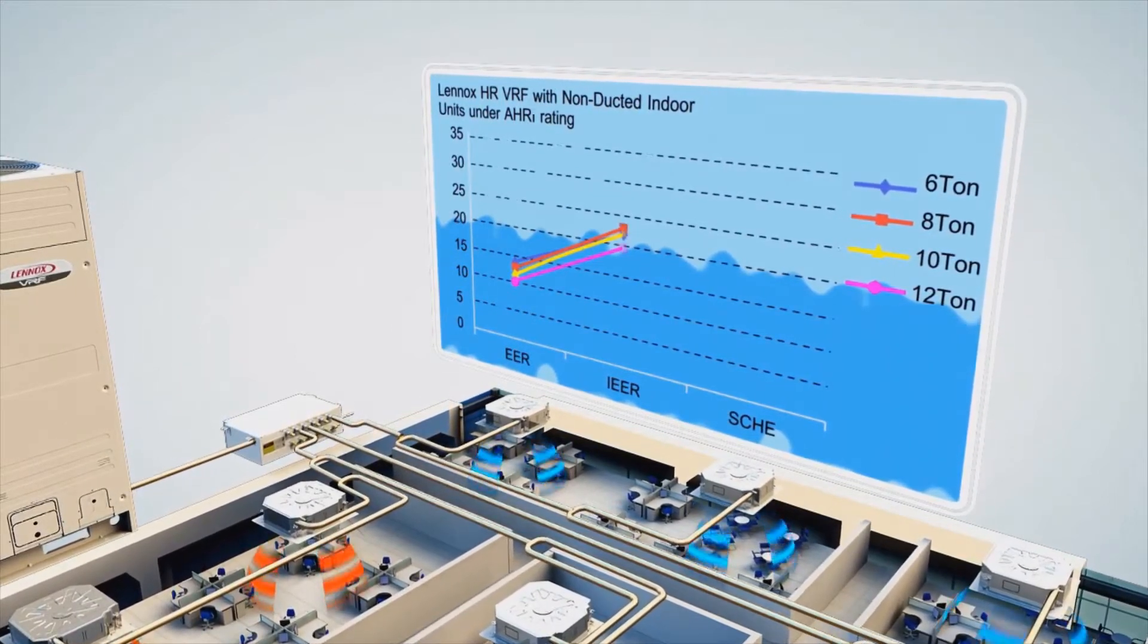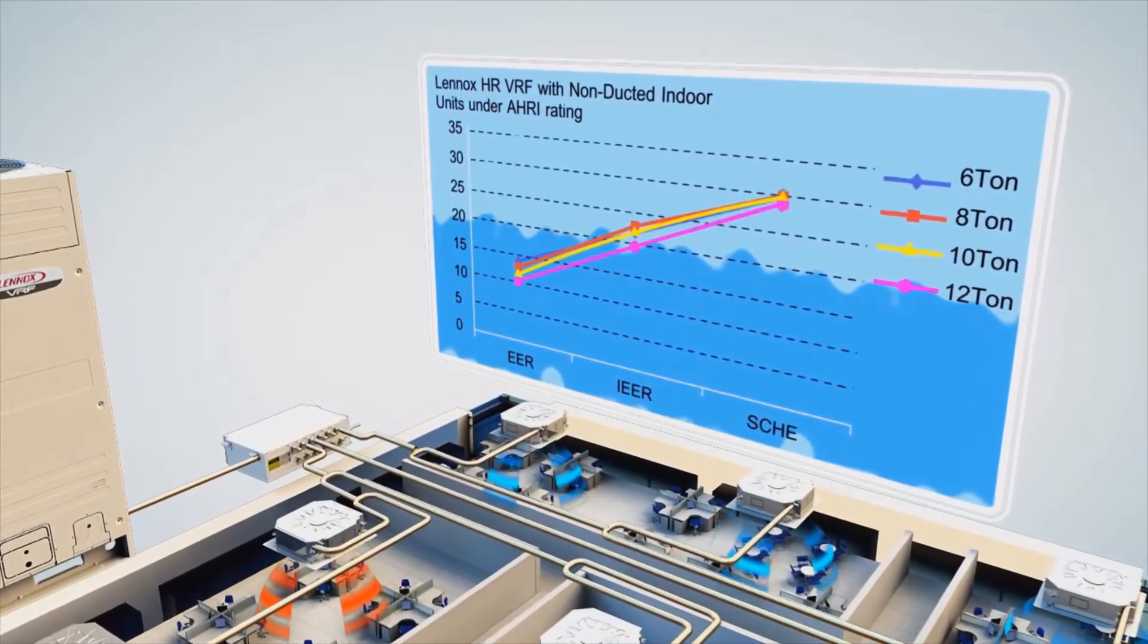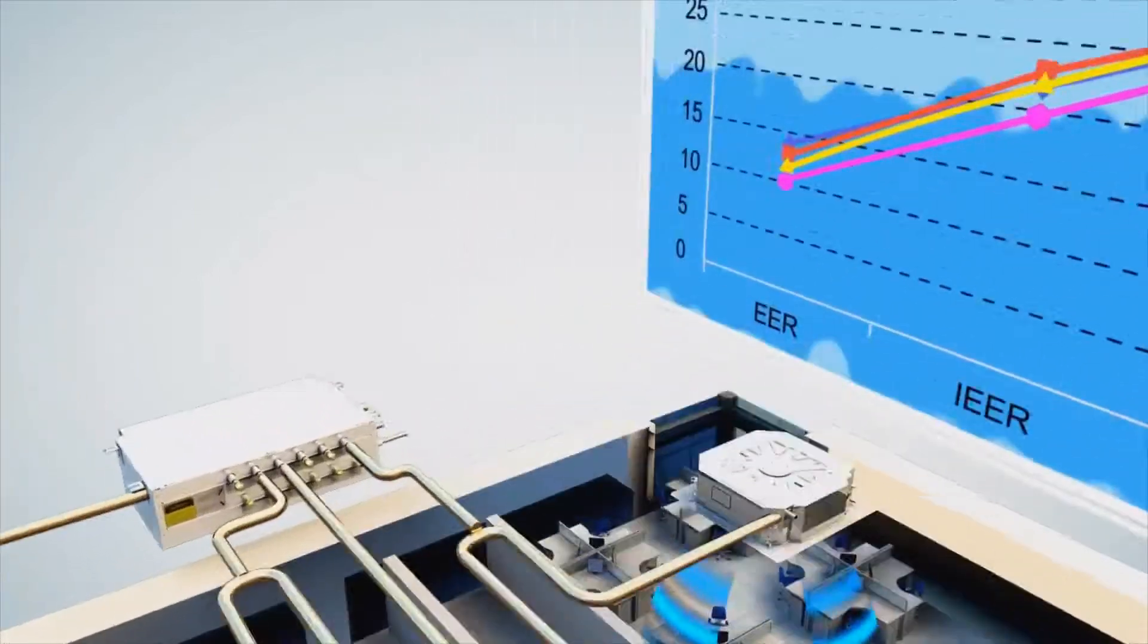Lennox VRF systems offer some of the highest efficiency available on the market today with part load IEER ratings up to 24 and simultaneous cooling and heating SCHE ratings up to 30.